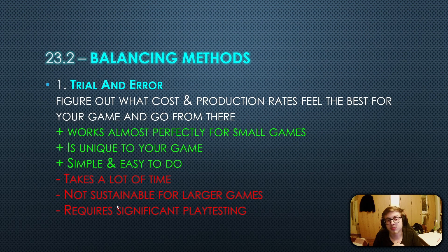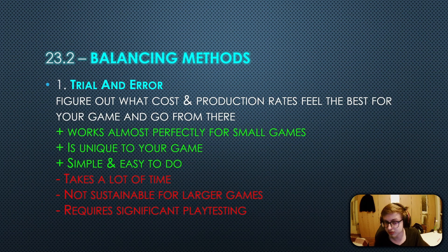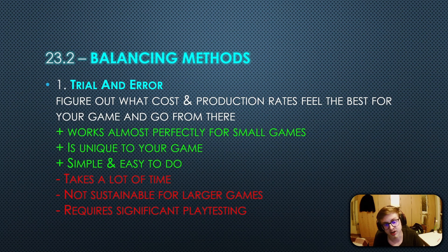Let's talk about the balancing methods you can use. The first one is what I like to call the trial and error method, where you just figure out what costs and production rates feel the best for your game and go from there. This method has quite a few advantages: it works almost perfectly for small games, is unique to your game, and is very simple and easy to do. However, it has a few disadvantages as well — it takes a lot of time, it isn't sustainable for larger games, and requires significant playtesting.